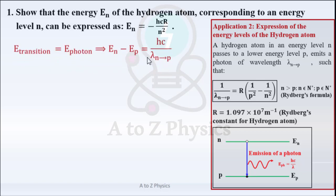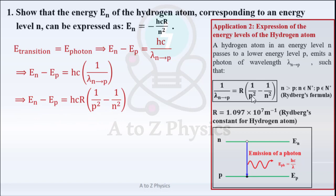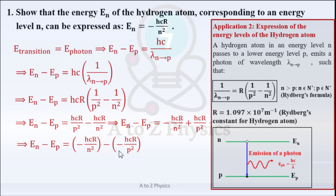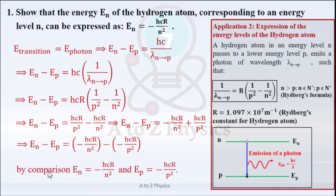EN minus EP = Hc over lambda. Replacing 1/lambda by Rydberg's formula R × (1/P² − 1/N²), we get: EN minus EP = HcR/P² − HcR/N², which equals −HcR/N² + HcR/P². Comparing both sides of this expression, we get EN = −HcR/N².